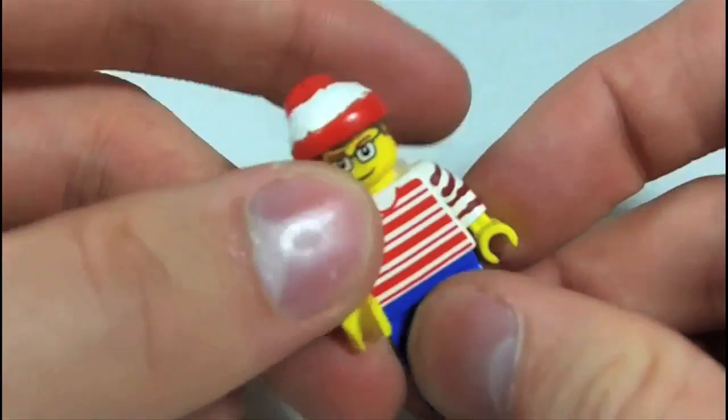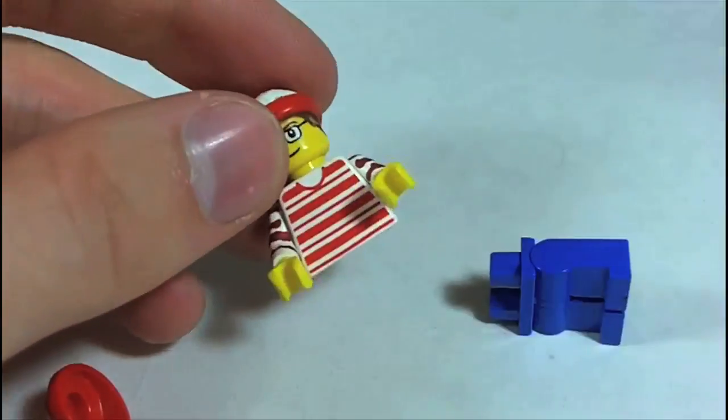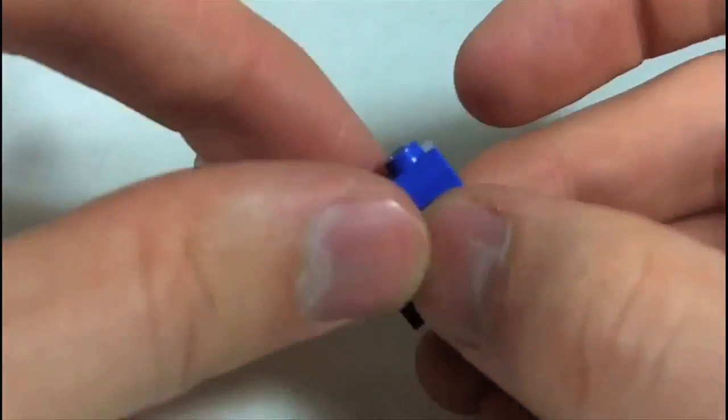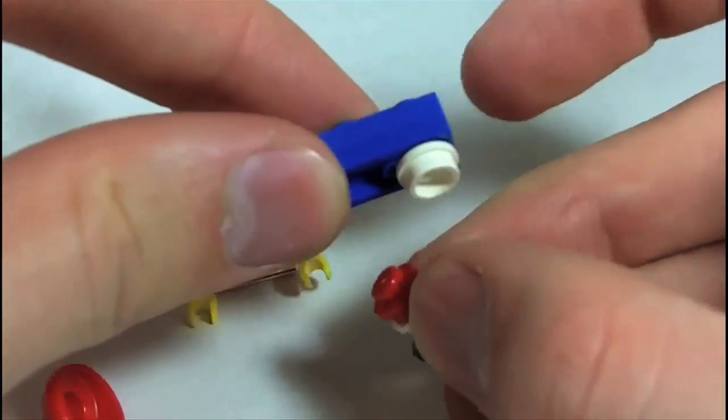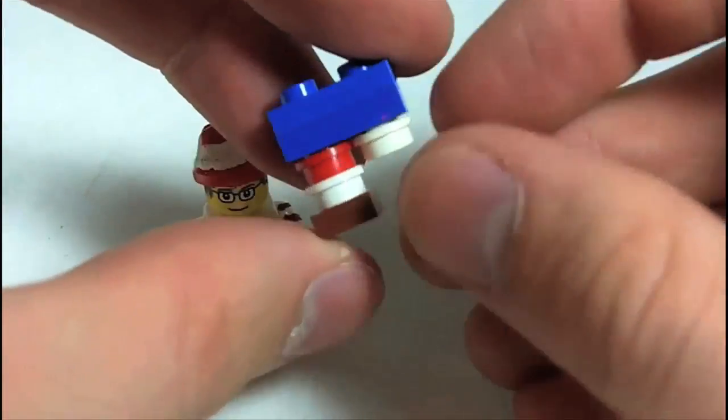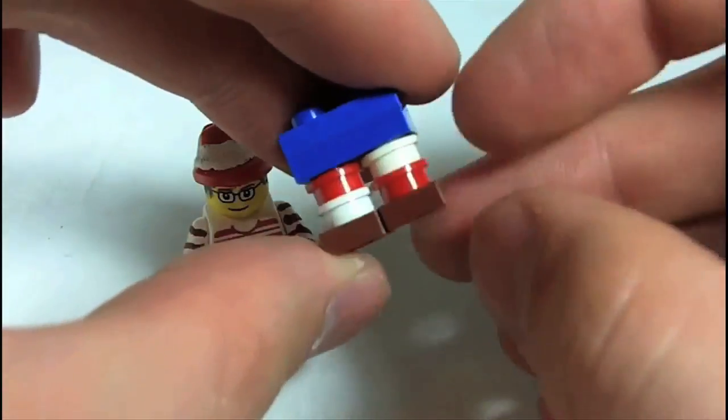You know, you can easily turn Waldo into Wilma just by changing the pants. So, this is two 1x2 blue plates. Then a red and white 1x1 round plate, and alternate white and red.